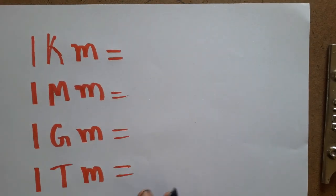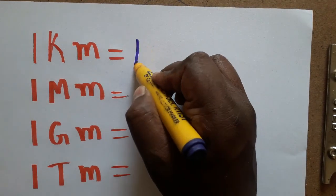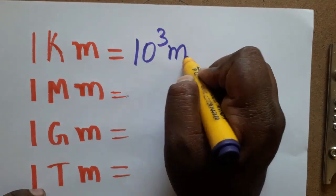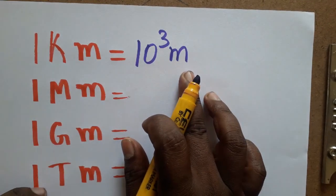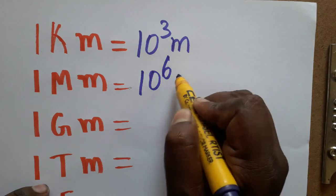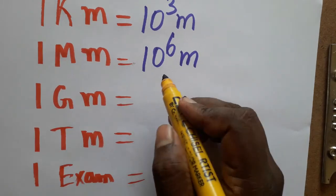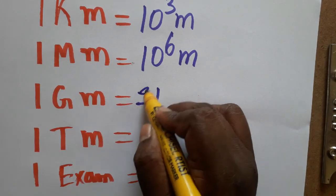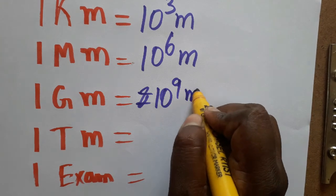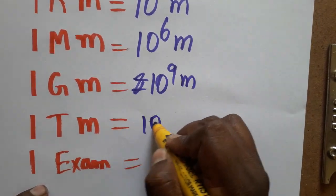terameter and also exometer. First, kilometer is 10 power 3 meter. Megameter is 10 power 6 meters. Gigameter is 10 power 9 meter. Terameter is 10 power 12 meter. Exometer is 10 power 15 meter.